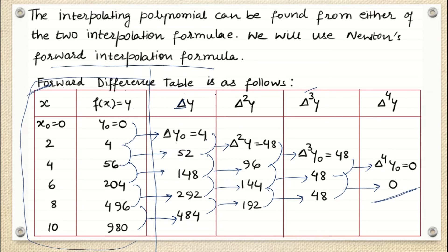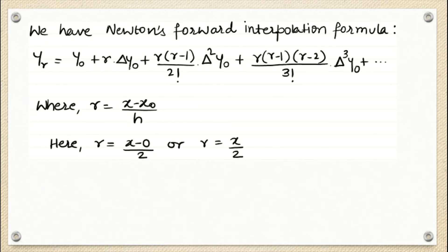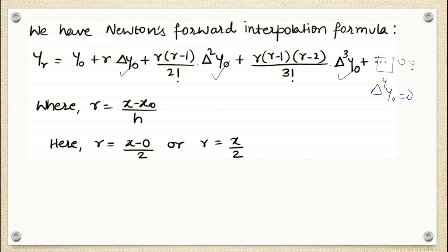The reason we build this Newton forward table is that we need the very first entries of Δy, Δ²y, Δ³y, and Δ⁴y to use in Newton's forward interpolating formula. Since Δ⁴y_0 = 0, we stop there — everything afterwards is also 0.